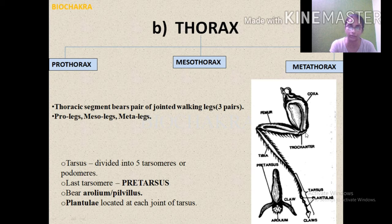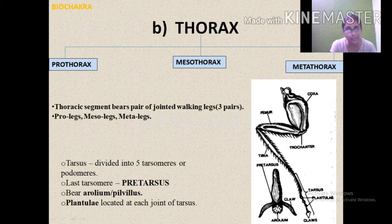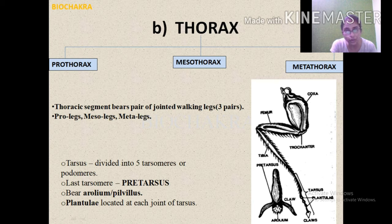Each leg consists of the following segments: coxa (a short triangular rod-like bone), trochanter (which articulates with coxa and femur), femur (a spiny bone), and tibia (the longest, spring-like segment).